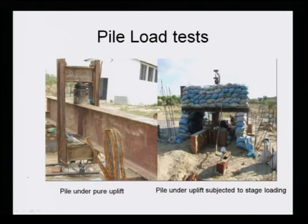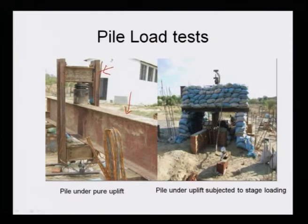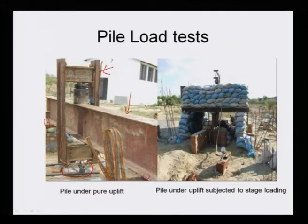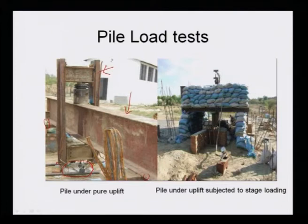This is a specially designed hollow girder, and this is another girder. The pile head is here, and these are the anchor piles at both ends. The hollow girder has been fixed to the pile head by welding it to the main reinforcements of the pile.